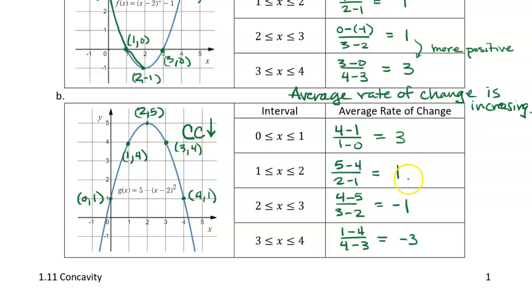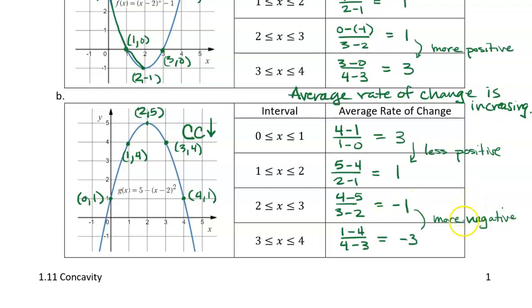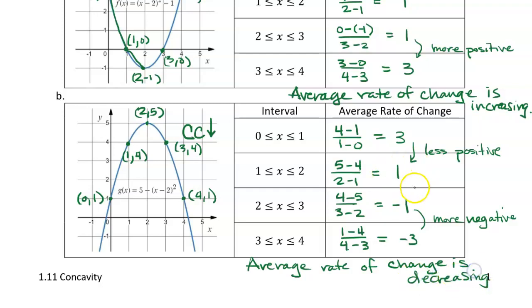Looking at these average rates of change — 3, 1, −1, −3 — they're going down, they're decreasing. Here it's becoming less positive, and here it's becoming more negative, but regardless, the average rate of change is always decreasing — going down by 2 each time. So the average rate of change is decreasing.